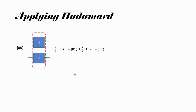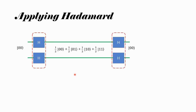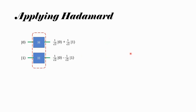Now let us see what happens to this state when we apply the Hadamard gates again. Just like previously, if the two qubits are in this superposition state, applying Hadamard again gives us back |00⟩.